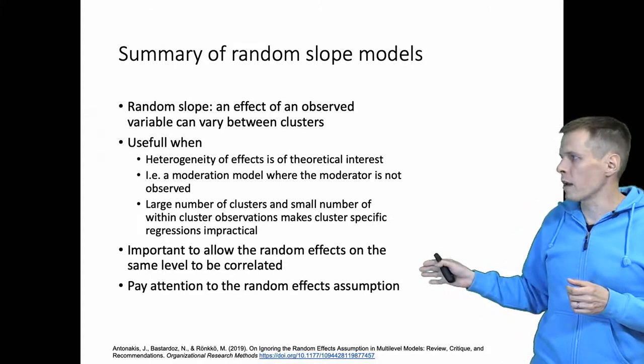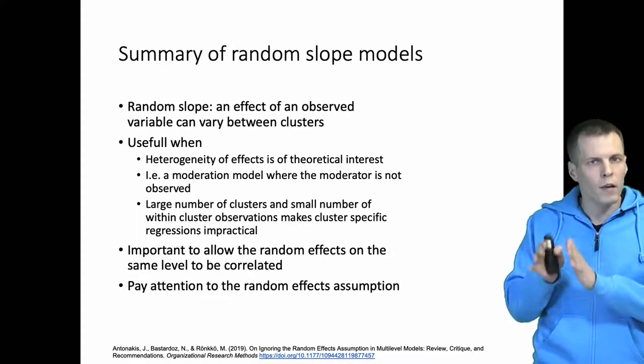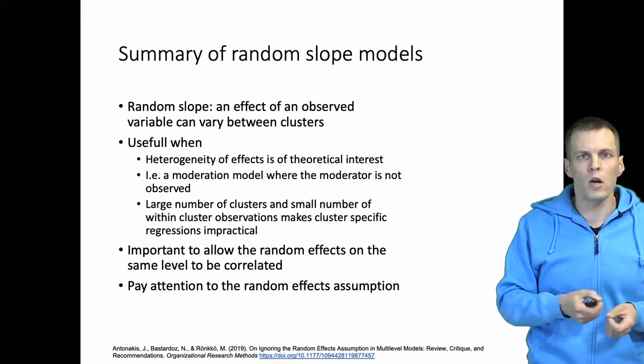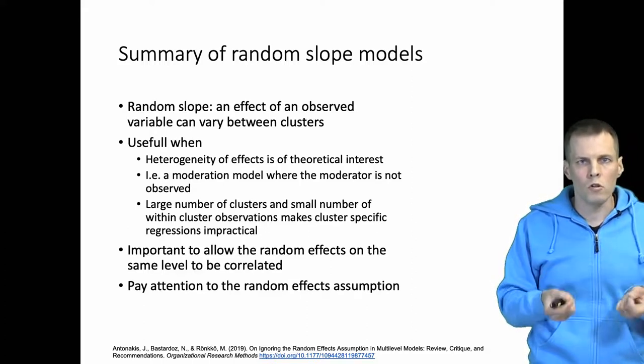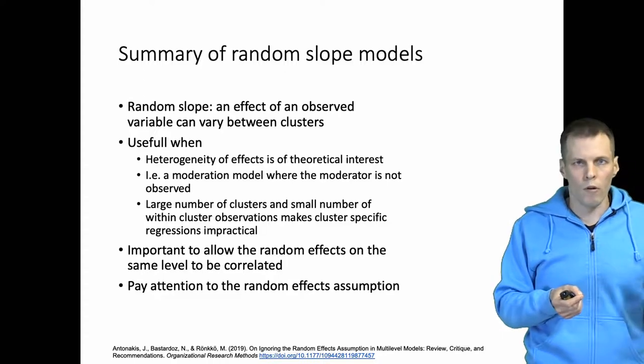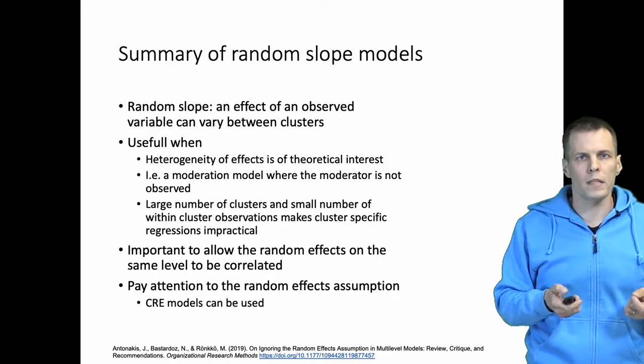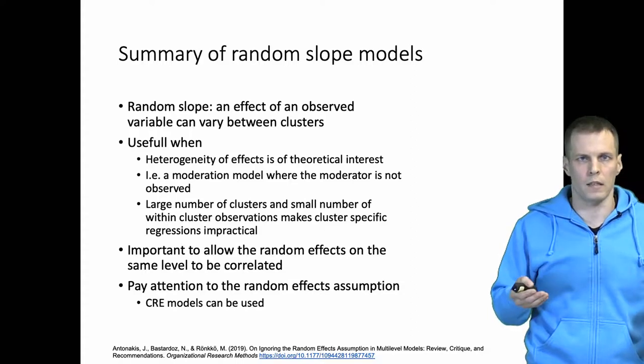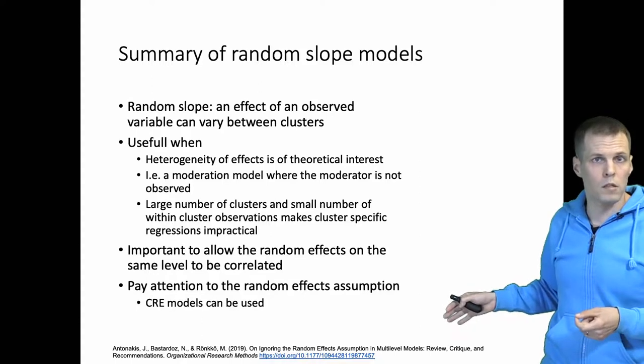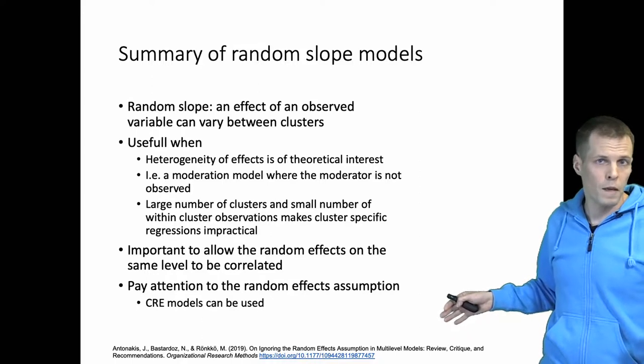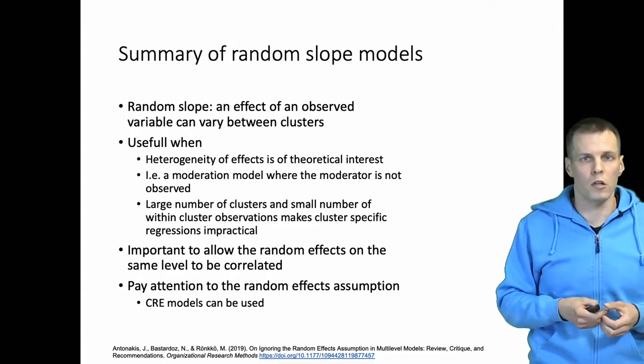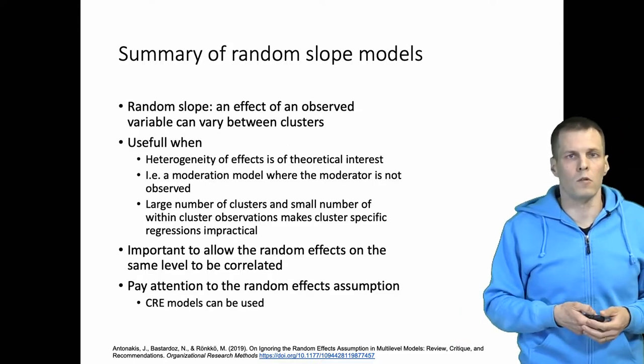Then we have the random effects assumption. Everything in the random part must be uncorrelated with the fixed part. If not, then you have an endogeneity problem. If you're concerned that the random effects may be correlated with the fixed part of the model, you can always apply the correlated random effects approach. We discuss how to apply correlated random effects models for random slope models in this article, and the article also provides references to other literature that explains how that is done.